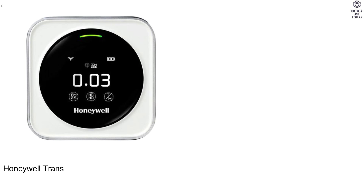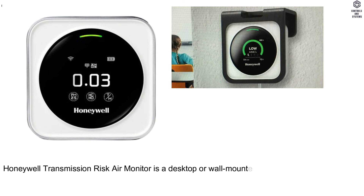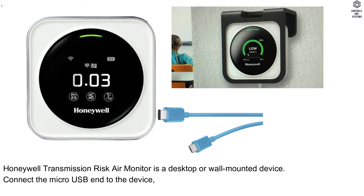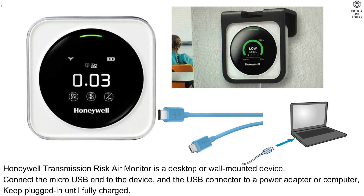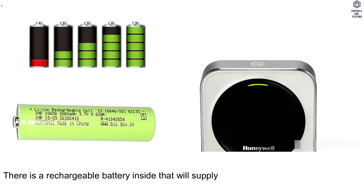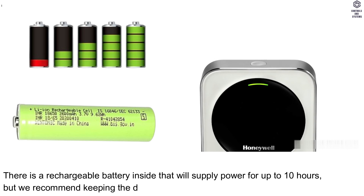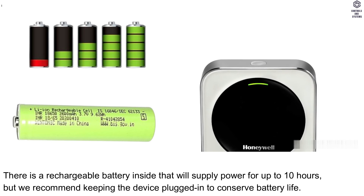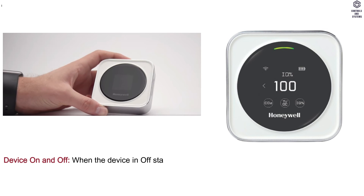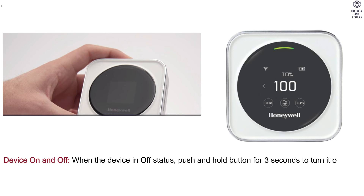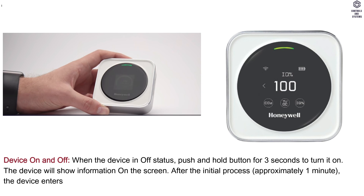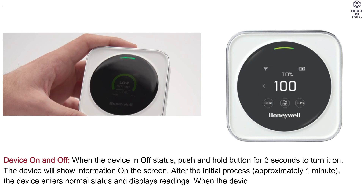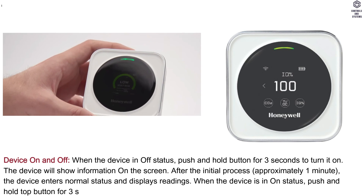Operation: the Honeywell Transmission Risk Air Monitor is a desktop or wall-mounted device. Connect the micro USB into the device and the USB connector to a power adapter or computer. Keep plugged in until fully charged. There is a rechargeable battery inside that will supply power for up to 10 hours, but keeping the device plugged in is recommended to conserve battery life. To turn on: push and hold the button for 3 seconds. The device will show information on screen, and after the initial process (approximately 1 minute) it enters normal status and displays readings. To turn off: push and hold the top button for 3 seconds.